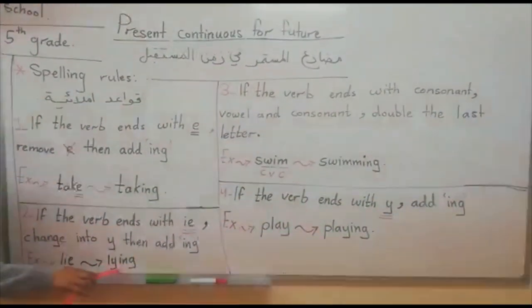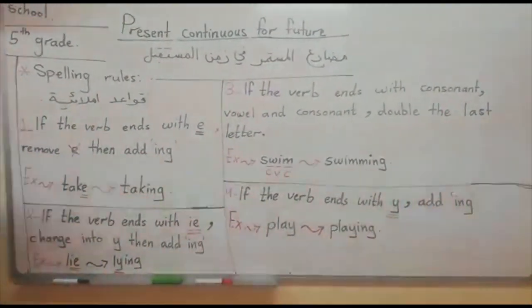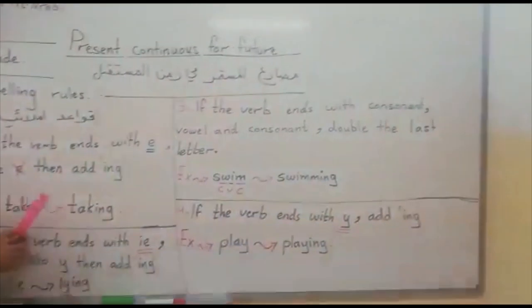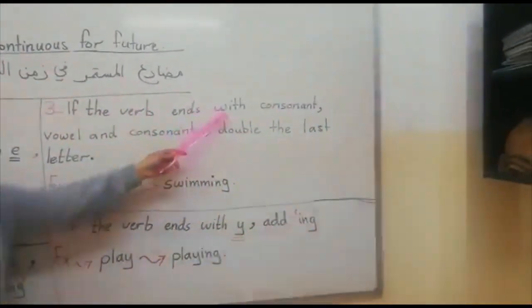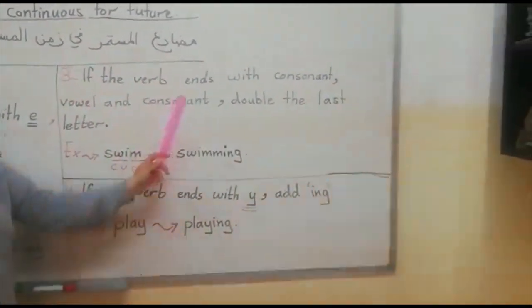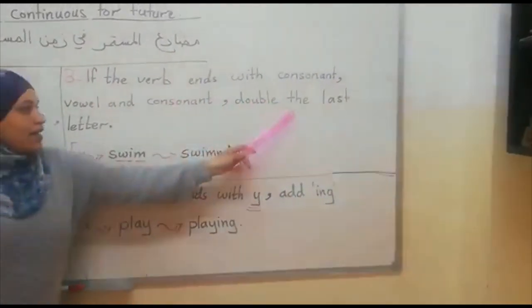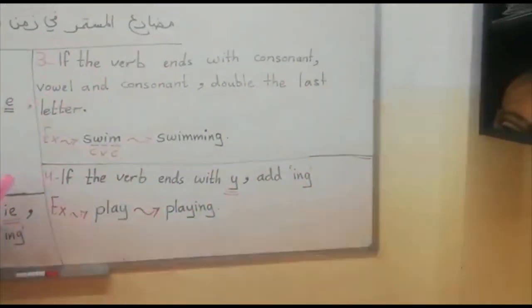If the verb ends with a vowel, add -ing directly. If the verb ends with a consonant-vowel-consonant pattern, double the last letter and then add -ing.